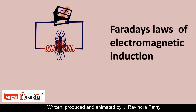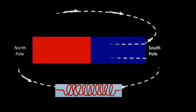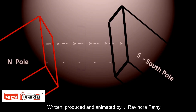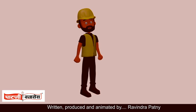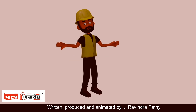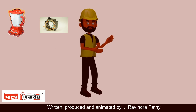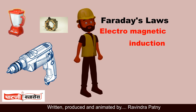Faraday's laws of electromagnetic induction give the relationship between magnetism and electricity — specifically, the interaction of a magnetic field with a metallic coil to produce electricity. Faraday's laws give us how to produce electricity with the help of magnetism. These laws have changed the entire world because every equipment functions by use of electricity. Today we talk about Faraday's laws of electromagnetic induction.